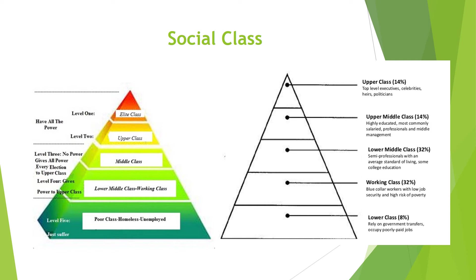Looking at the social class pyramid: the top 14 percent is the upper class. Below that is lower middle through lower class, which is a very large section. Lower semi-professionals with some college education, then blue collar with low job security and high risk of poverty, then those who rely on government transfers and occupy poorly paid jobs. That's almost 75 percent of people in our society that are lower class or below. You see the names: elite, upper class, middle class, lower middle, poor class, homeless and unemployed.